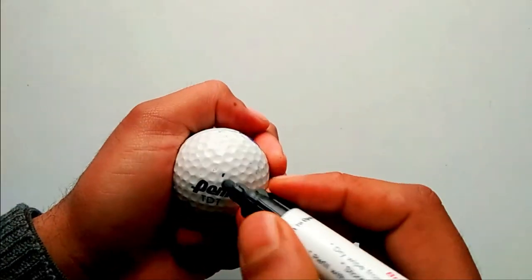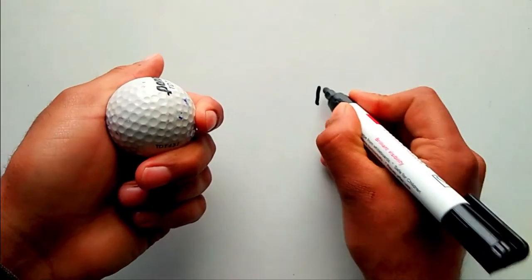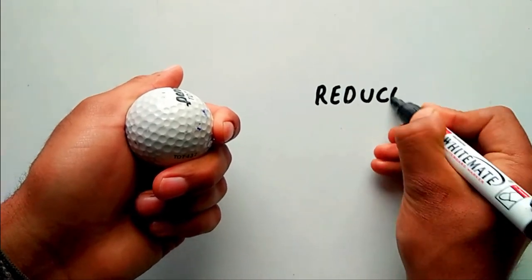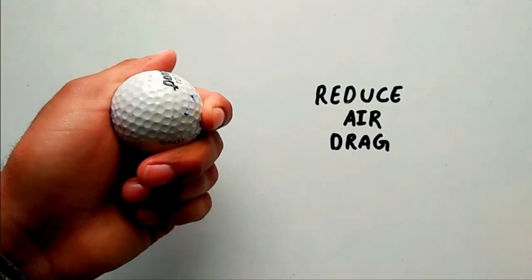The primary function of the dimple is to reduce the air drag on the ball by reducing the pressure difference between the front and the rear of the ball.